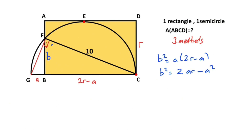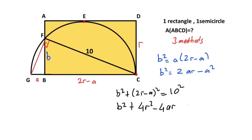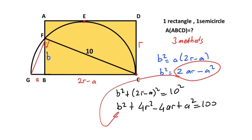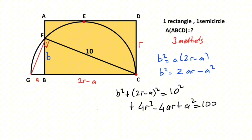Now if you focus on triangle FBC, for this triangle if you apply the Pythagorean theorem, we get b squared plus (2r minus a) squared equals 10 squared, which is 100. Substituting 2ar minus a squared for b squared and expanding, we get 4r squared minus 4ar plus a squared. After simplifying, the a squared terms cancel, leaving 4r squared minus 2ar equals 100.